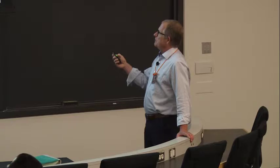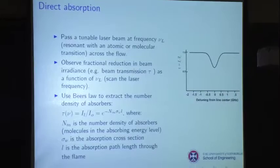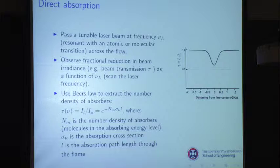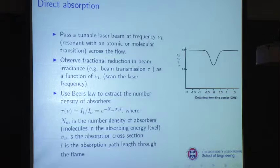We scan the laser across the line and see it reduced in intensity because it's partly absorbed, and it has a line width as we talked about yesterday. We use Beer's Law to extract the number density from this expression, which assumes a homogeneous mixture of absorbers across the line of sight. Nm is the number density of absorbers in the absorbing level — M for the ground level — sigma is the absorption cross-section, and L is the path length through the flame.